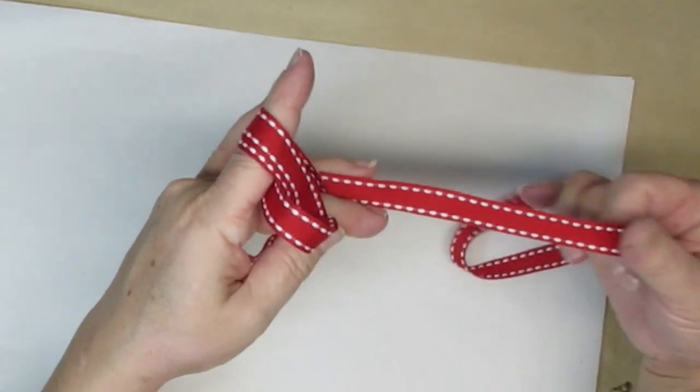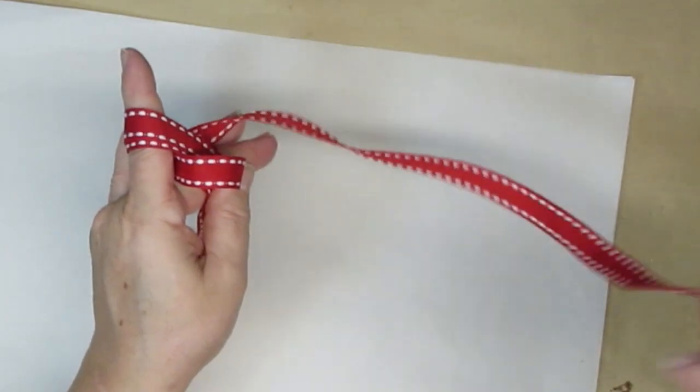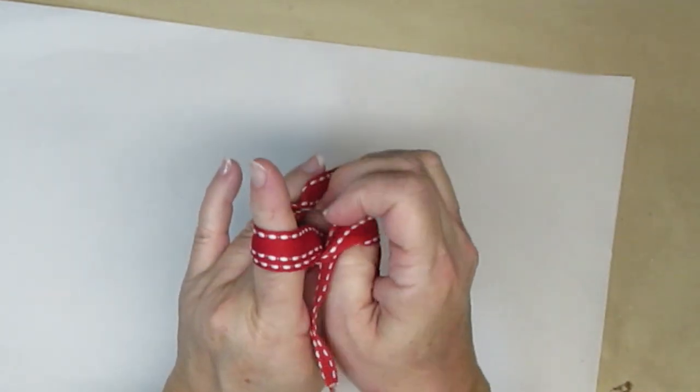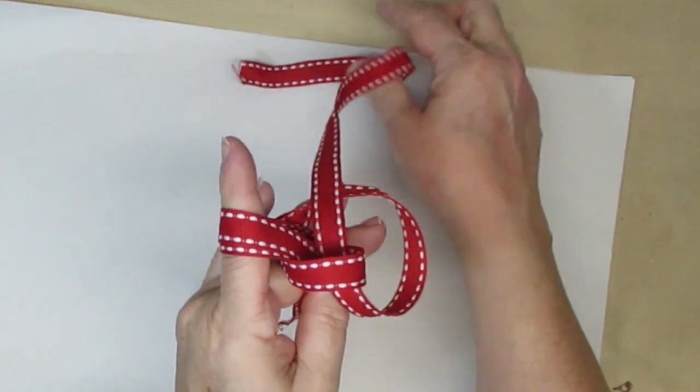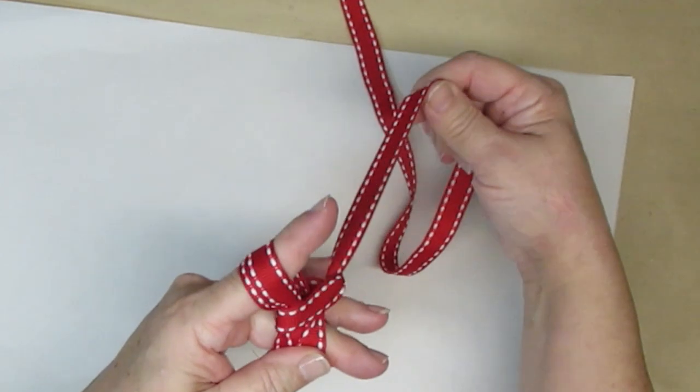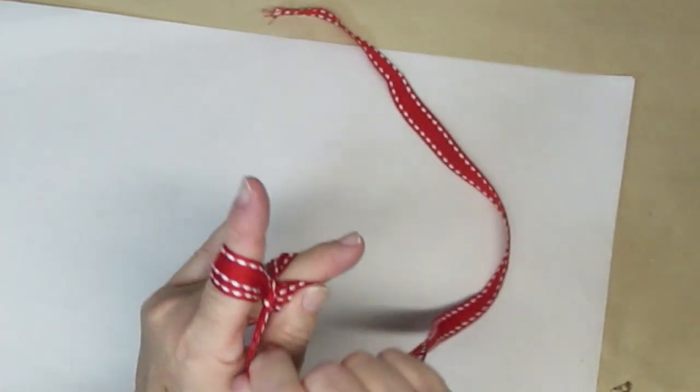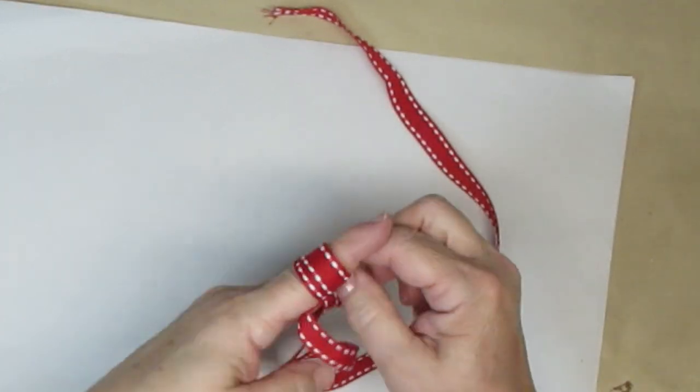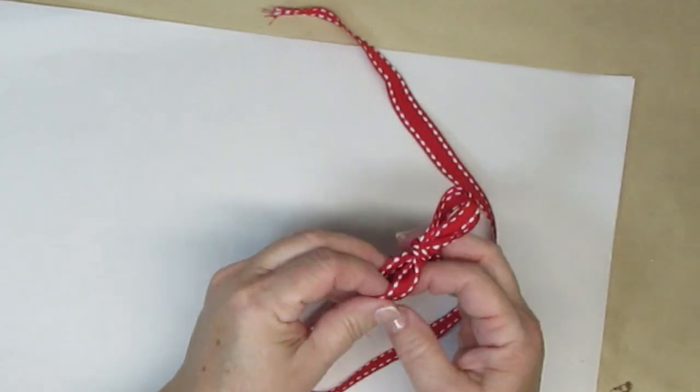Now take the end of the ribbon again, put it around your fingers, and push it through the bottom of the loop like you see me doing here. You should be pulling it up away from your fingers and then pull it tight and move that ribbon back and forth until you get the tightness you want and your tails are hanging both down in the same direction.